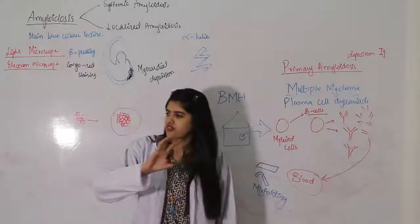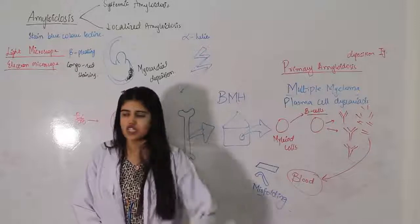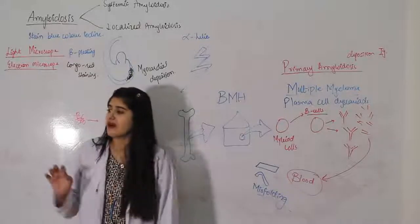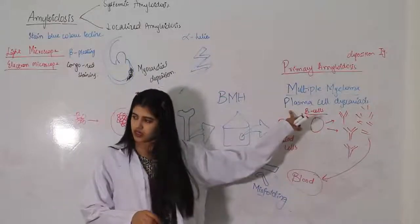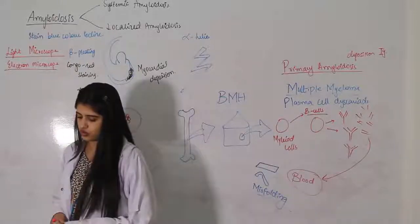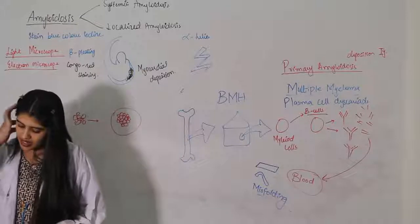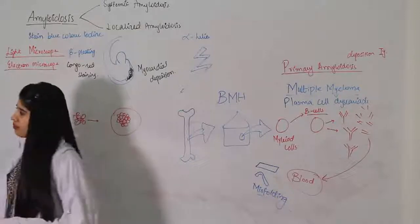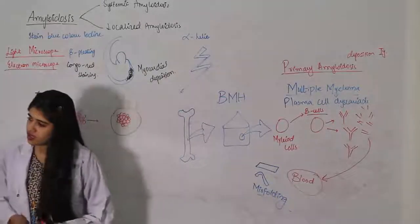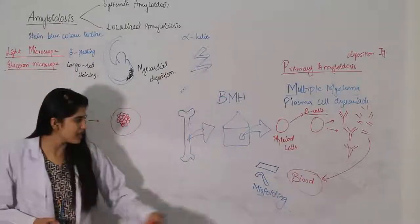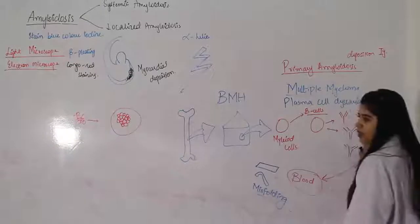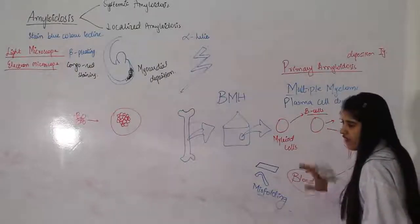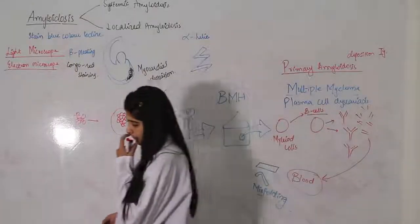In hematology lectures coming up, I am going to talk about plasma cell dyscrasias, multiple myeloma, and all diseases about the blood - you can go through that video too. The same light chains are converted into misfoldings. The light chains go into the blood, there is accumulation of these light chains, and then they get misfolded over there - also called plasma cell dyscrasias.